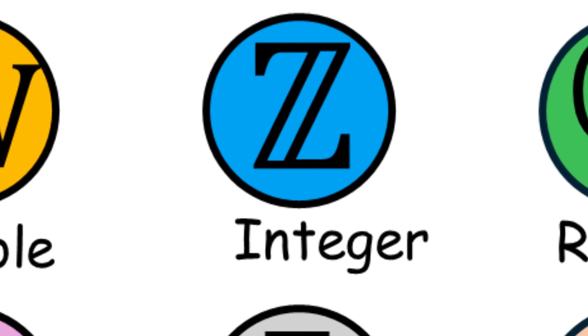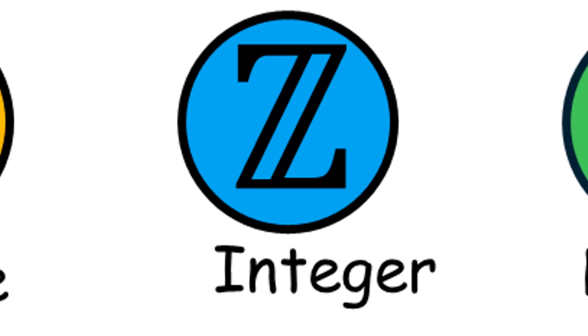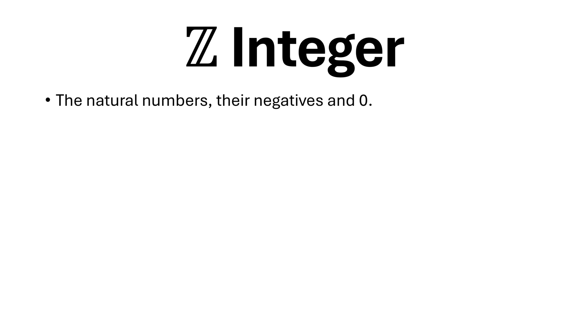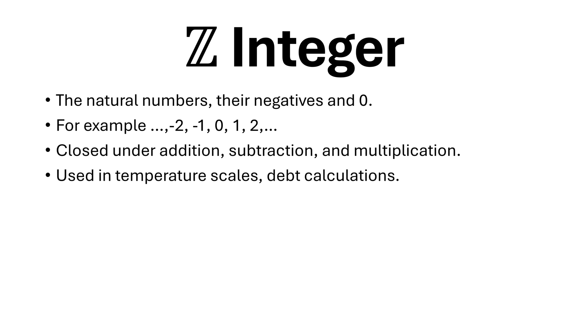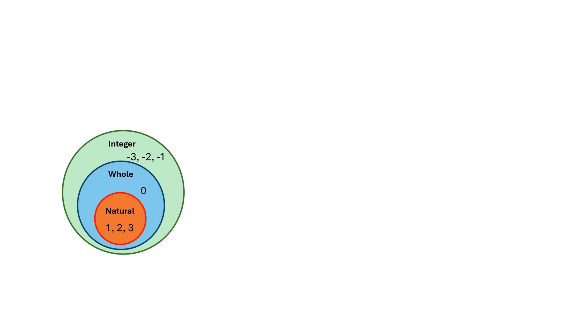The integers are the natural numbers, their negatives, and 0. For example, -2, -1, 0, 1, 2. They are closed under addition, subtraction, and multiplication. Used in temperature scales and debt calculations.